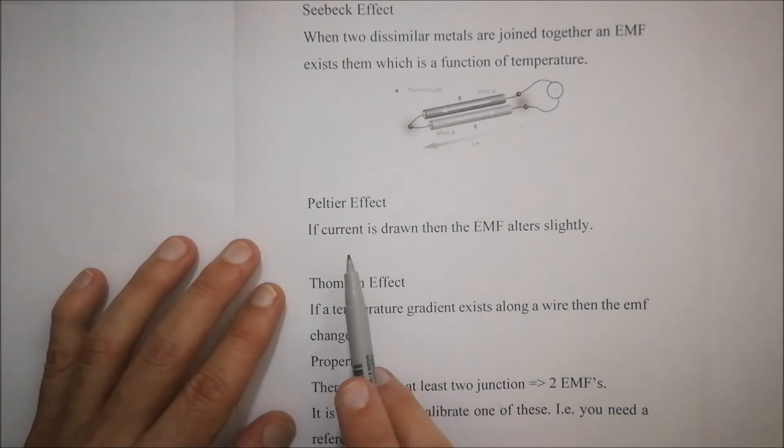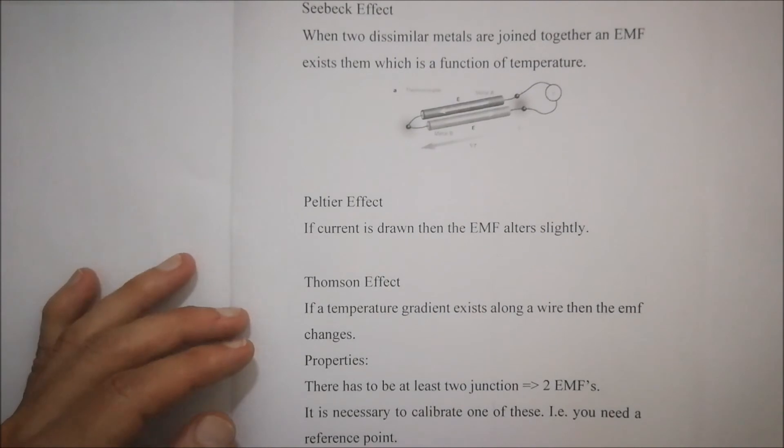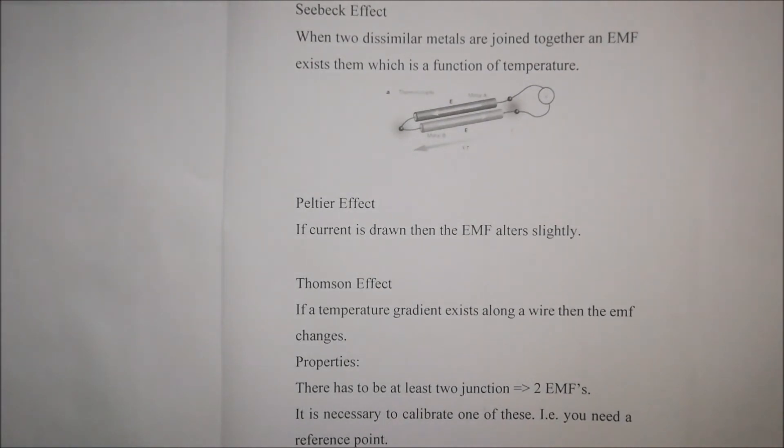The Peltier effect. If current is drawn, then the EMF alters slightly. You might have come across this before where, for example, you're measuring the voltage of a battery. And as you apply a globe onto it and it starts shining, as you continue measuring that voltage, you'll actually realize the voltage might drop slightly because there's some current being drawn.